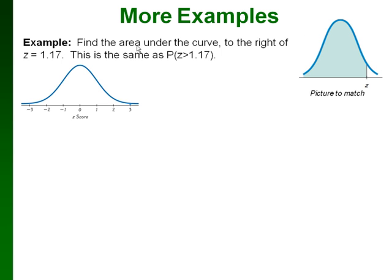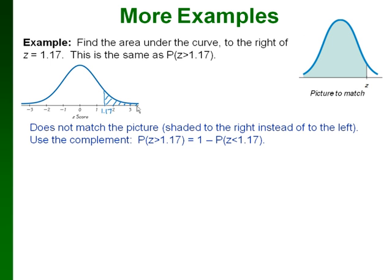Another example: this time we're finding the area to the right of z equals 1.17, or the probability that z is greater than 1.17. If we draw in 1.17 and our shading, we see the shading is going to the right, so it doesn't match the table picture. We can use the complement: since the whole area under the curve equals 1, we take 1 minus the probability that z is less than 1.17, and that gives us 0.1210.